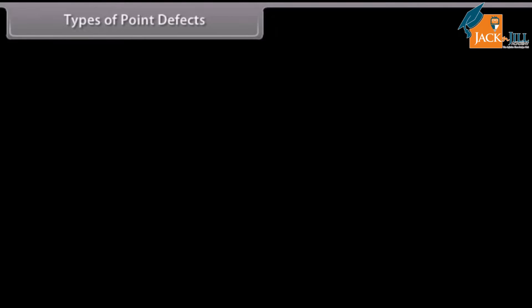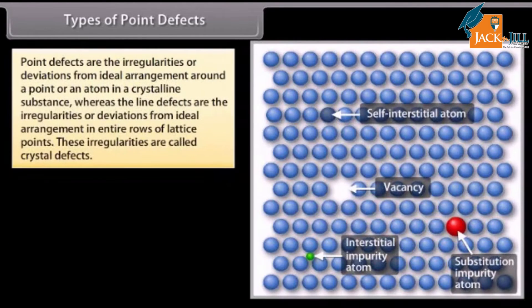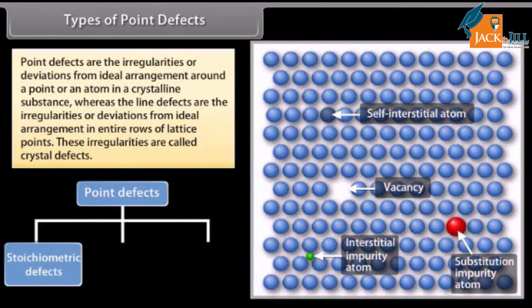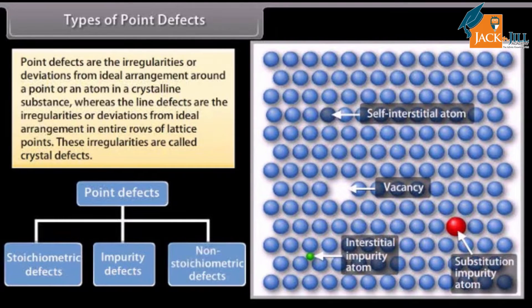Types of point defects. Point defects are the irregularities or deviations from ideal arrangement around a point or an atom in a crystalline substance, whereas line defects are irregularities in entire rows of lattice points. These irregularities are called crystal defects. Point defects can be classified into three types: 1. Stoichiometric defects, 2. Impurity defects, and 3. Non-stoichiometric defects.